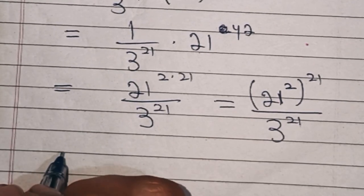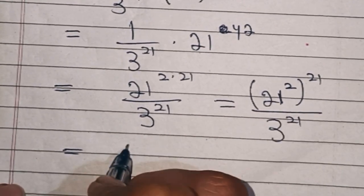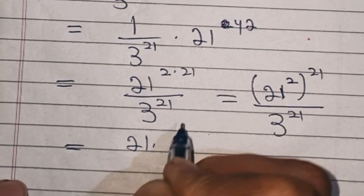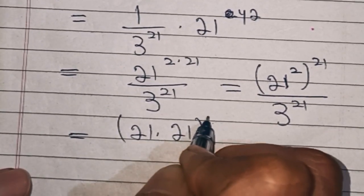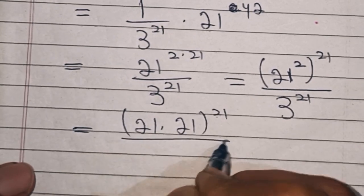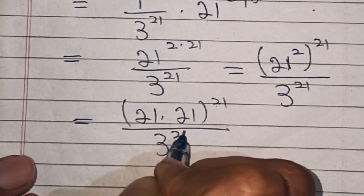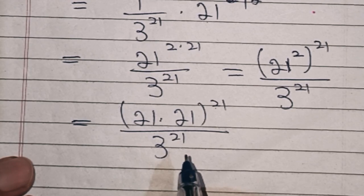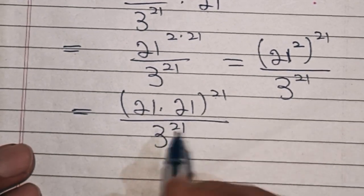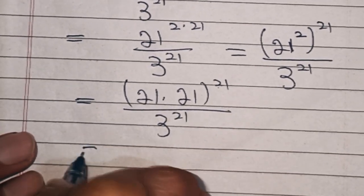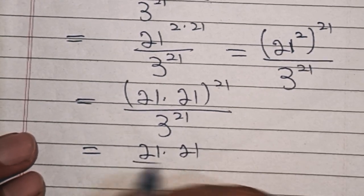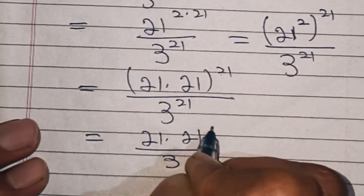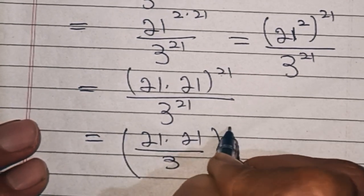In the next step this 21 square is same as 21 times 21 then bracket power 21 over 3 power 21. Now here we have the same exponents so this is equal to 21 times 21 over 3 then bracket